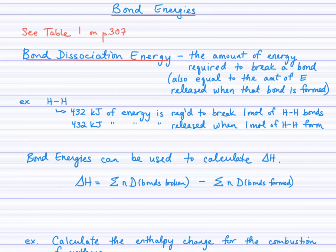That unit is kilojoules per mole. So what does that mean? It means that 432 kilojoules of energy is required to break one mole of hydrogen-hydrogen single bonds. That's also the same amount of energy that's released when one mole of hydrogen-hydrogen single bonds form, through the law of conservation of energy.